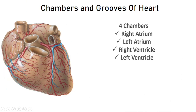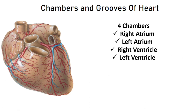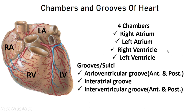Now we will see the chambers. As we discussed, there are four chambers in the heart: the right atrium, right ventricle, left atrium, and the left ventricle. These chambers are divided by grooves or sulci. You can see divisions between the atria and the ventricles. These are the atrioventricular grooves, which divide the atrium from the ventricle, further divided into the anterior and posterior atrioventricular grooves.